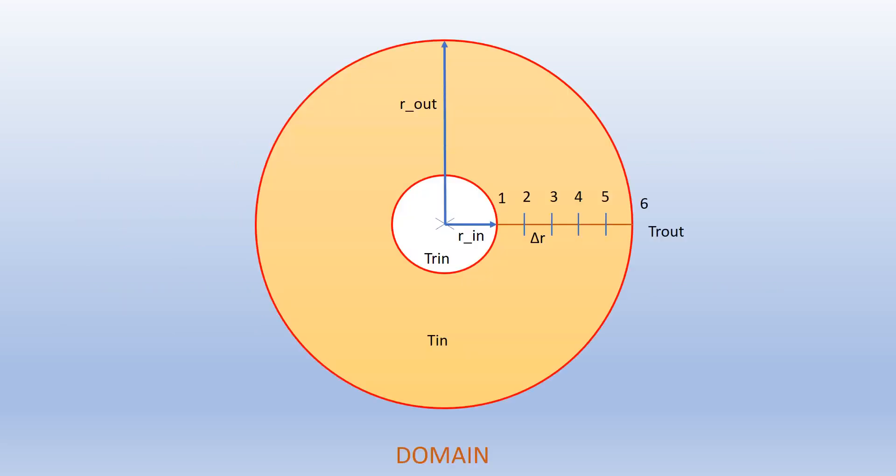Our domain is a cross section of a hollow cylinder. The inside radius is shown as r_in and the outside radius as r_out. The temperature at the inside surface is T_r_in and at the outside surface is T_r_out. The initial temperature of the domain is T_in. The domain is divided into a number of segments in the radial direction, from 1 to 6, and each segment length is delta r.